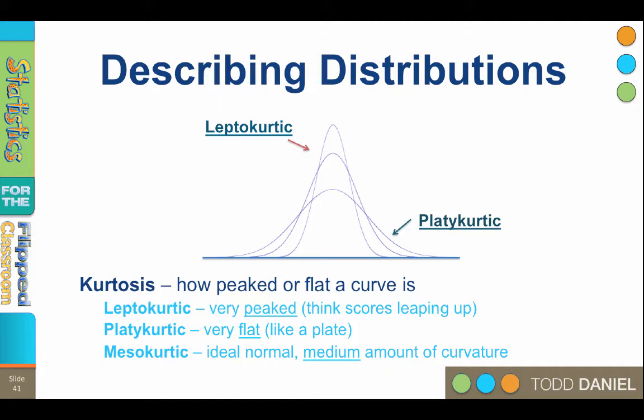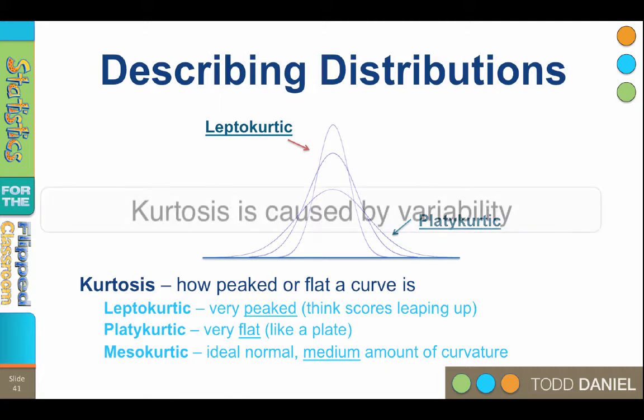So kurtosis can be measured as leptokurtic, tall, platokurtic, flat, or mesokurtic. Kurtosis is caused by the variability in the distribution.